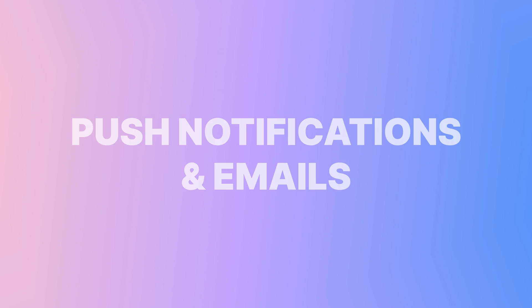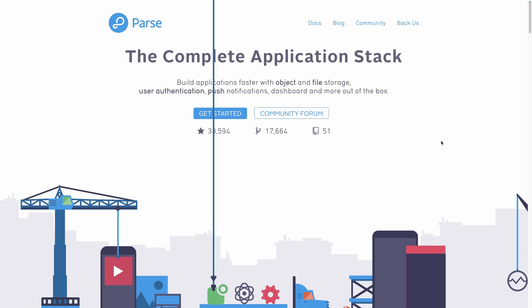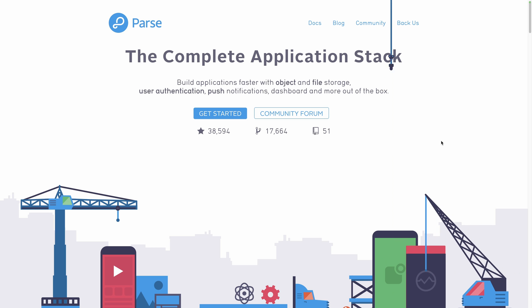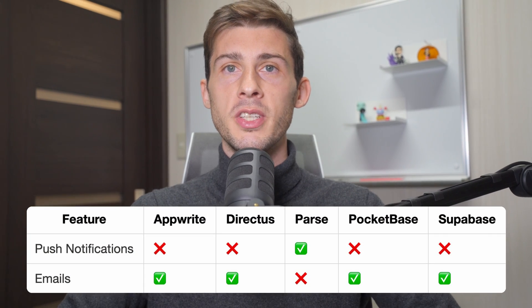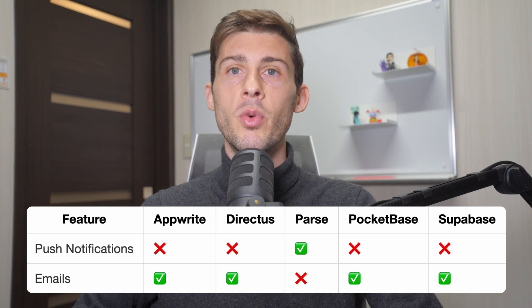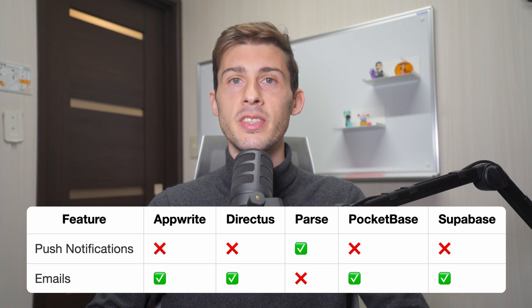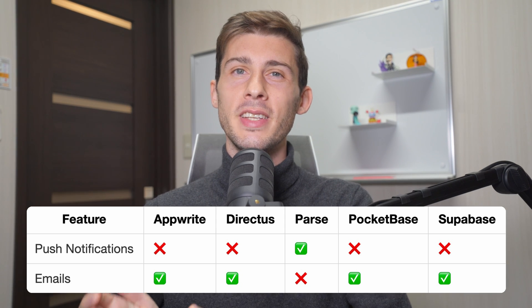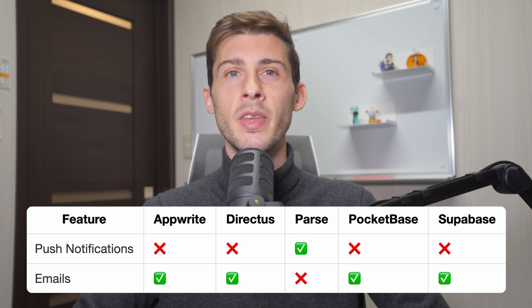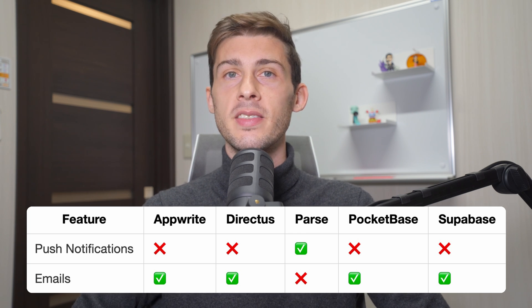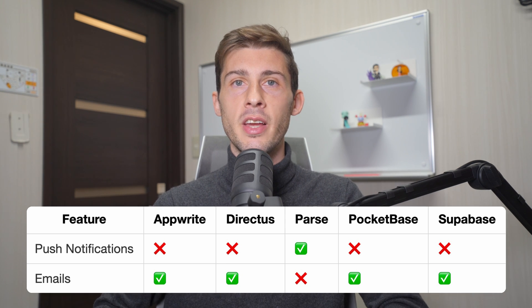Push Notifications and Emails. Most apps need to send emails and/or push notifications — it's a must-have feature. However, many external services provide this, so it's not a big deal if your BaaS solution doesn't support it natively. Except for Parse, they all support emails out of the box, such as welcome emails and password reset. Parse doesn't support emails natively, but you can integrate a third-party service like SendGrid or Mailgun. What makes Parse unique is its built-in support for push notifications and a dashboard to send them, which has been a reason for its wide adoption. But you can integrate a third-party service like OneSignal or Firebase Cloud Messaging with the others with a few extra lines of code.